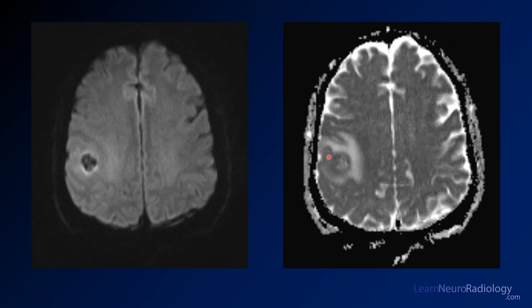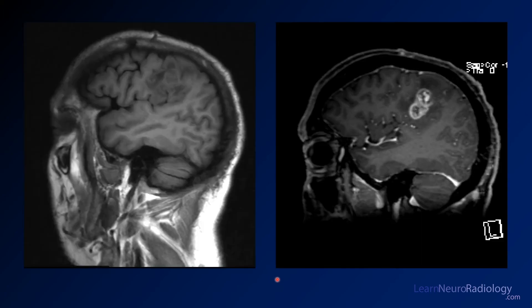On the diffusion images, particularly the ADC, there's a dark rim. On the DWI itself, it's centrally very dark due to susceptibility effect from hemorrhage centrally within the lesion. On the sagittal view, you get another idea of how heterogeneous and multilobular this lesion is — it's not completely enhancing and has central necrosis. This multilobular appearance is more common for GBMs, though metastasis would still be in the differential.